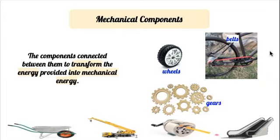Belts can also be found in bulldozers, escalators, etc. And gears, such as the ones that constitute the engines of cars, washing machines, amongst others. So these are the mechanical components — they are physical objects that help to transform energy.